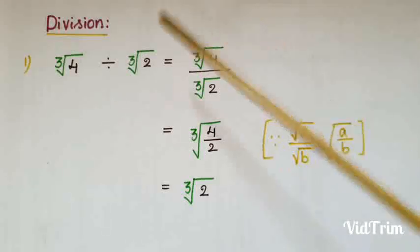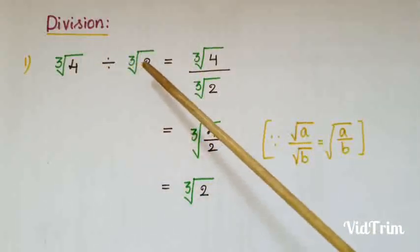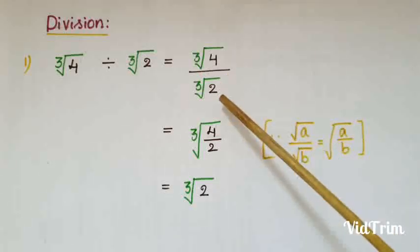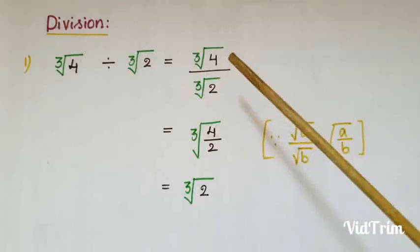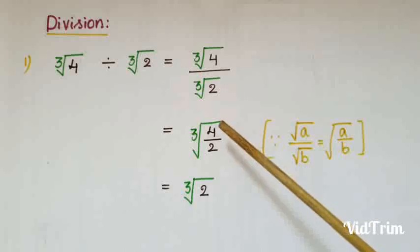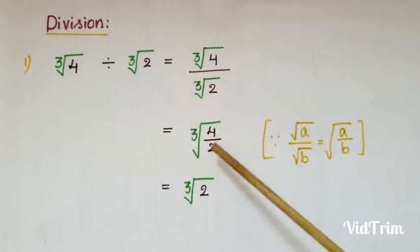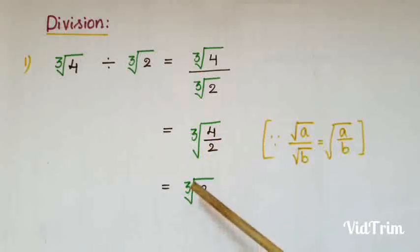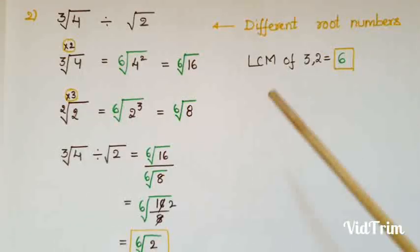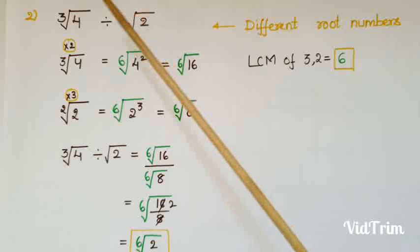Now I will explain division of roots. The first example is ∛4 ÷ ∛2, which we can write as ∛4 / ∛2. We know that ∛a / ∛b = ∛(a/b), so this equals ∛(4/2) = ∛2.